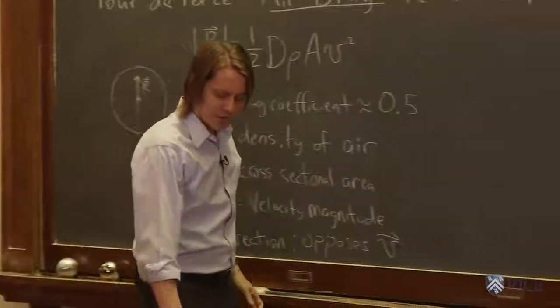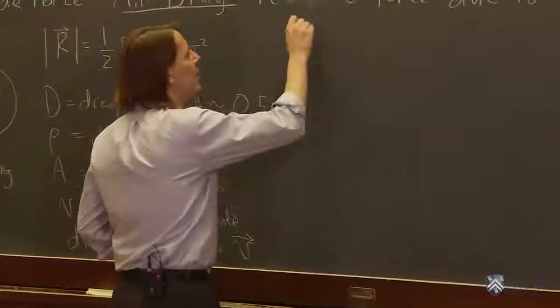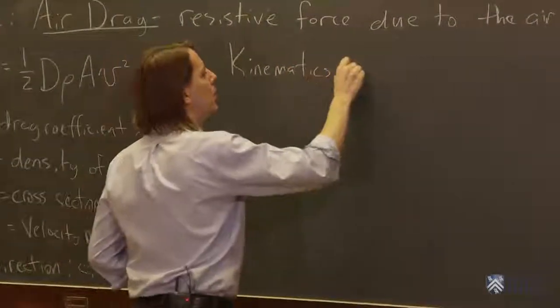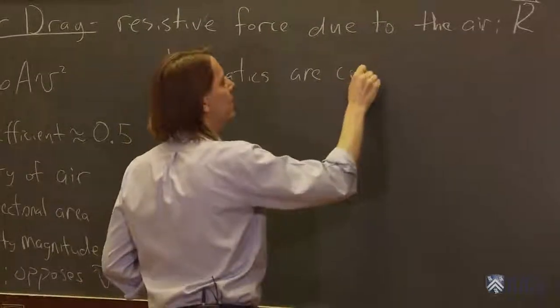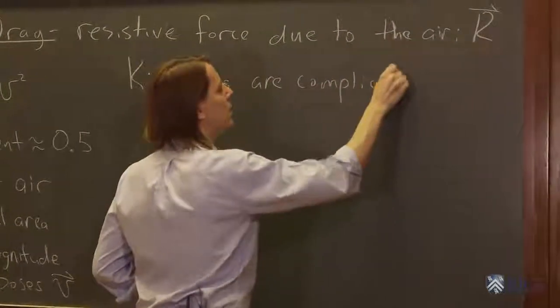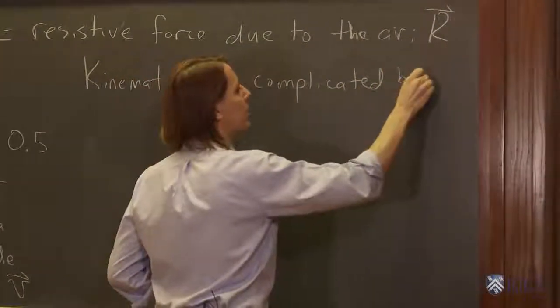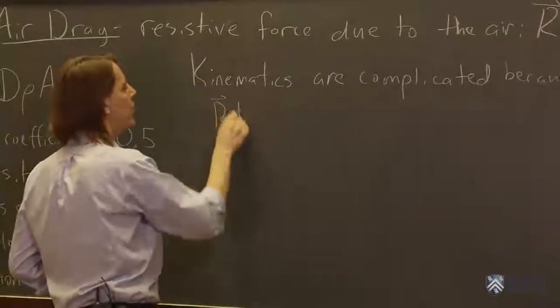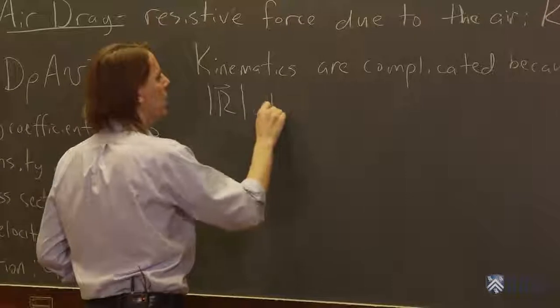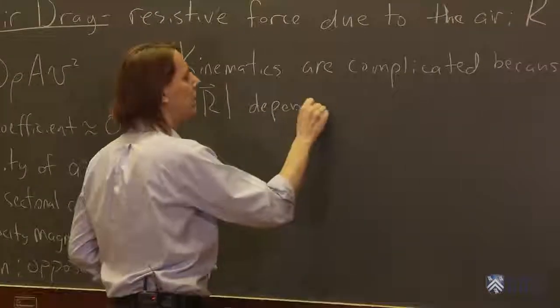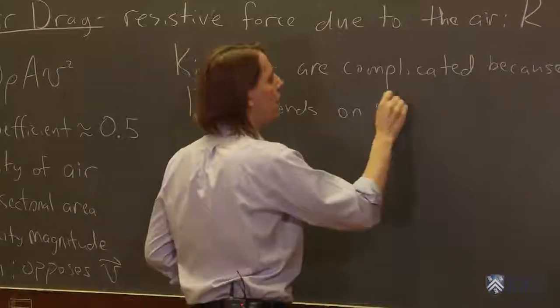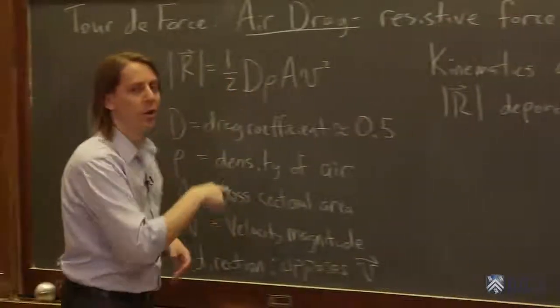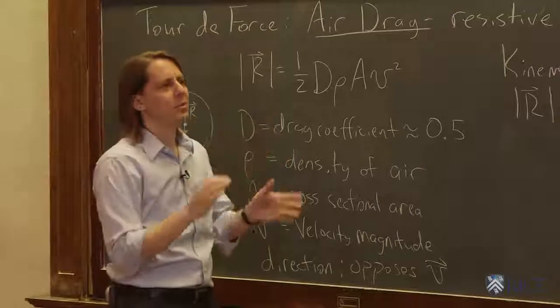So let's think about the kinematics. The kinematics are complicated because r, the magnitude of r, depends on the magnitude of v, actually the magnitude of v squared.